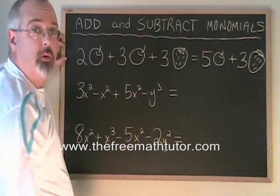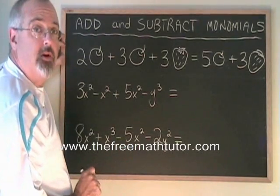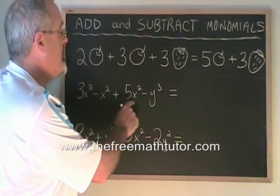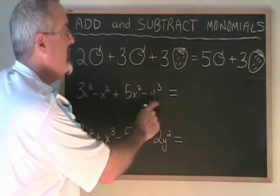There are two types of terms here. We have three different terms that have x², and we only have one term with y³.